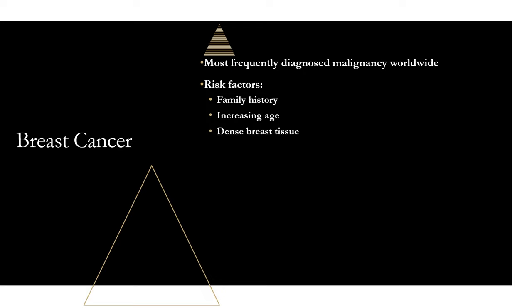Next is dense breast tissue. Women with mammographically dense breast tissue — generally defined as dense tissue comprising 75% or more of the breast — have a higher breast cancer risk compared to women of a similar age with less or no dense tissue. The reason behind this is not completely understood, but remember: dense breast tissue means higher breast cancer risk.